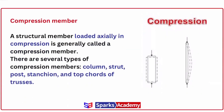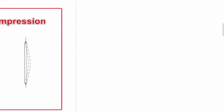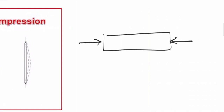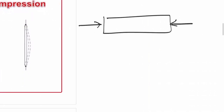A structural member loaded axially in compression is generally called a compression member. We have multiple types of members — maybe tension members and compression members. When a compressive force acts on a member, it is a compression member. If you have trusses or framed structures, compression members are present in all these.